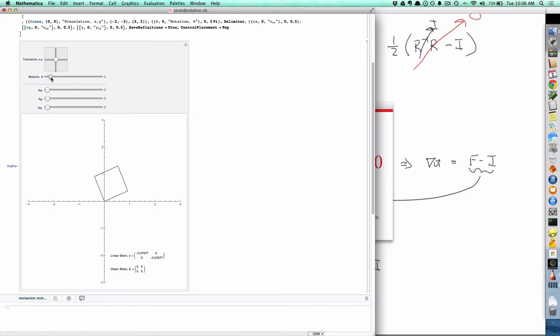If I make a pure rotation, I'm not deforming this cube at all, I'm just rotating it. And even though you may not be able to read the numbers, this was all zeros to begin with. You see it hasn't changed. The green strain is all zeros. This is changing.